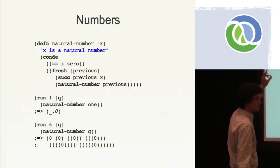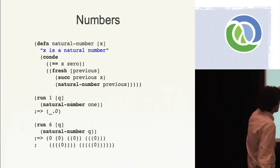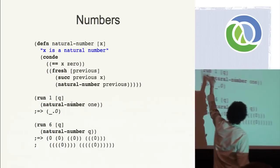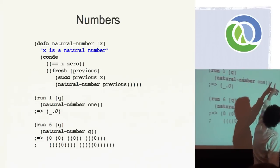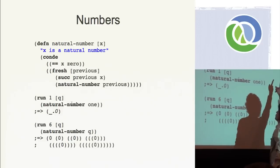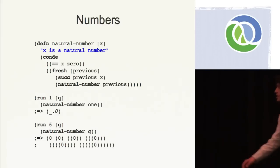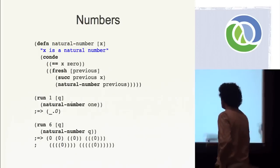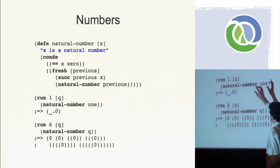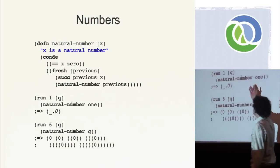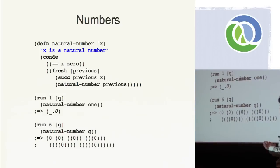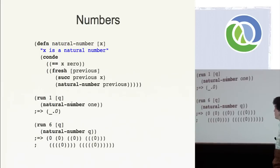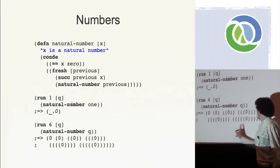Looking at the implementation, there are two branches. The first is our base case where X is zero. The second branch says there is a number called previous such that previous is a natural number — that's the recursive case. You can imagine we keep going until previous is zero and we hit the base case. The way to use natural-number: we can use it as a predicate. Give me one value of Q such that one is a natural number — you don't need to change the world, so Q is unbound, that's successful. Now, give me six values of Q such that Q is a natural number — we get zero, one, two, three, four, and five.